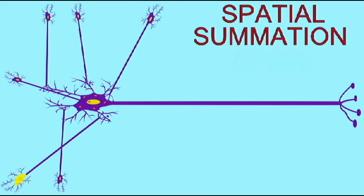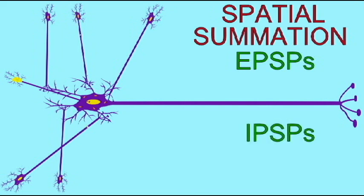In contrast, some of the neurotransmitters secreted by these pre-synaptic neurons are inhibiting the post-synaptic neuron and making it less likely to go to action potential. They are causing IPSPs, or inhibitory post-synaptic potentials.